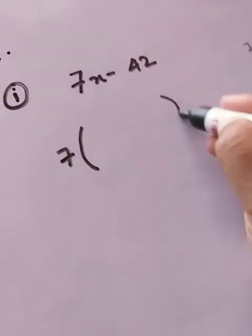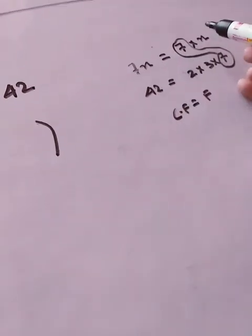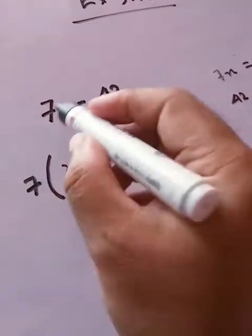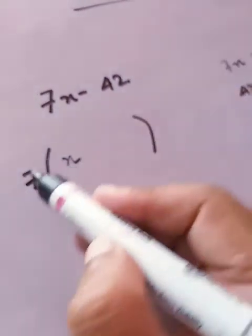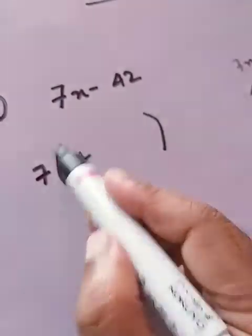So we'll write 7 and we'll put a bracket. Now if we take 7 from the first one, what is remaining? x. So we'll write x because we have taken 7 as a common factor - 7x can be divisible by 7 and 42 can also be divisible by 7.